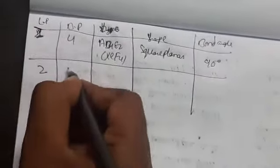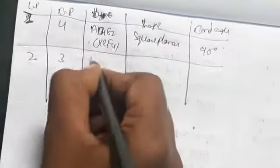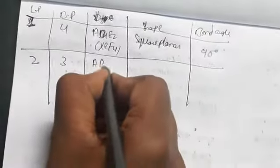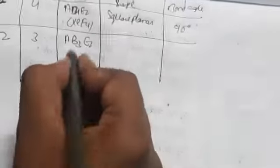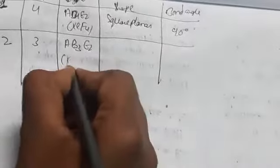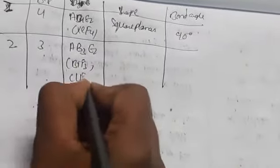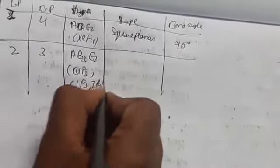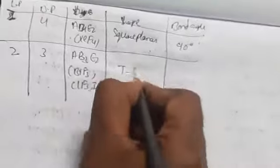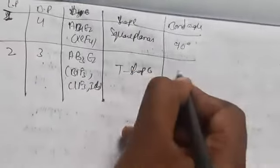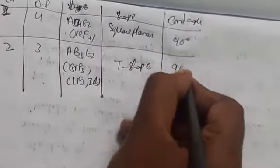With two lone pairs and three bond pairs, the molecule type is AB3E2 and the shape is T-shaped. Examples include BrF3, ClF3, and ICl3. The bond angles are 90° and 180°.